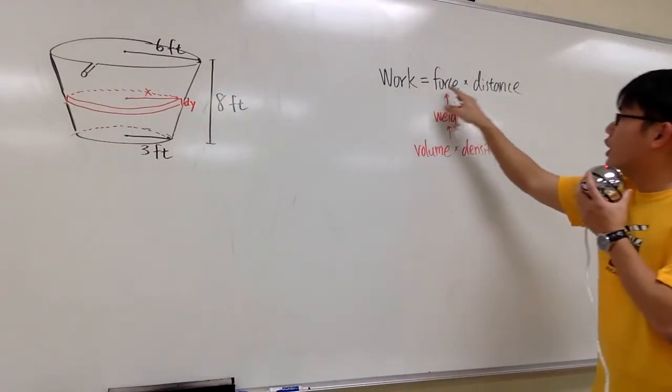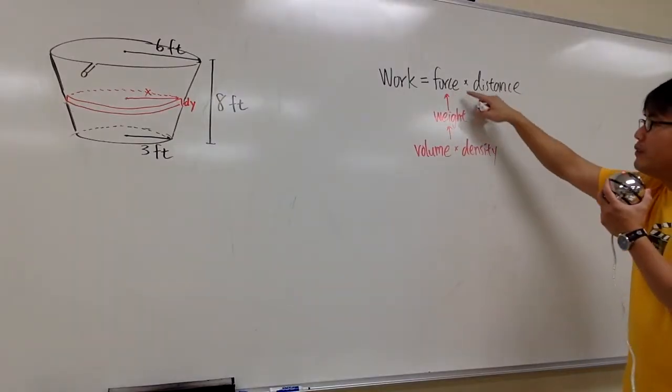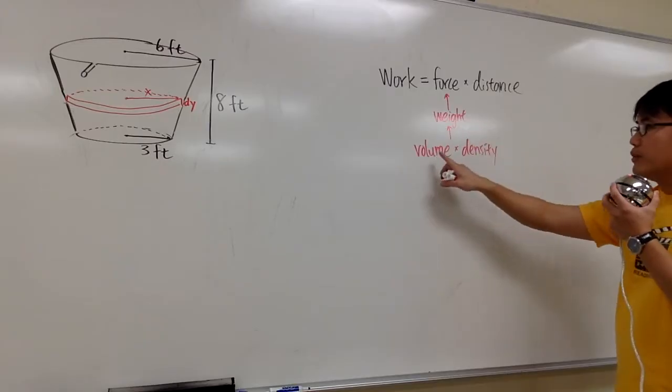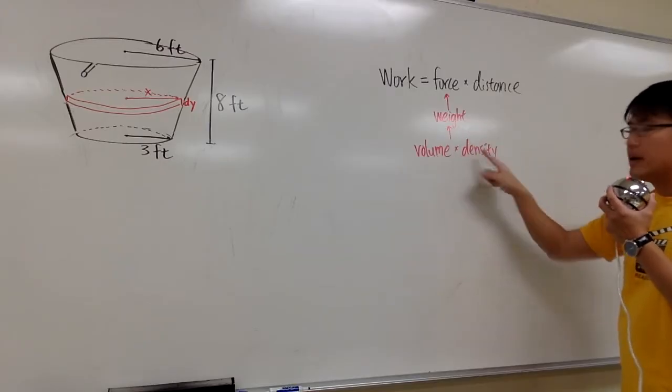For work, we have to look at the force times distance formula. For the force, it's pretty much just the weight, and to figure out the weight, we first have to look at the volume, and then we multiply that by the density.